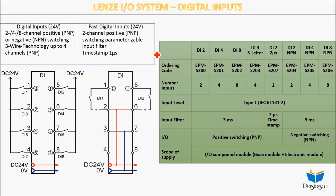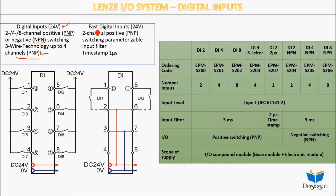In this video we will take a look at the IO system digital inputs. We already learned the communication modules, and now we are going to learn digital input modules. For the digital inputs, it is 24 volt by default — four or eight channel positive PNP or negative NPN inputs. We can use PNP or NPN inputs with two-wire and three-wire technology, up to four channels.